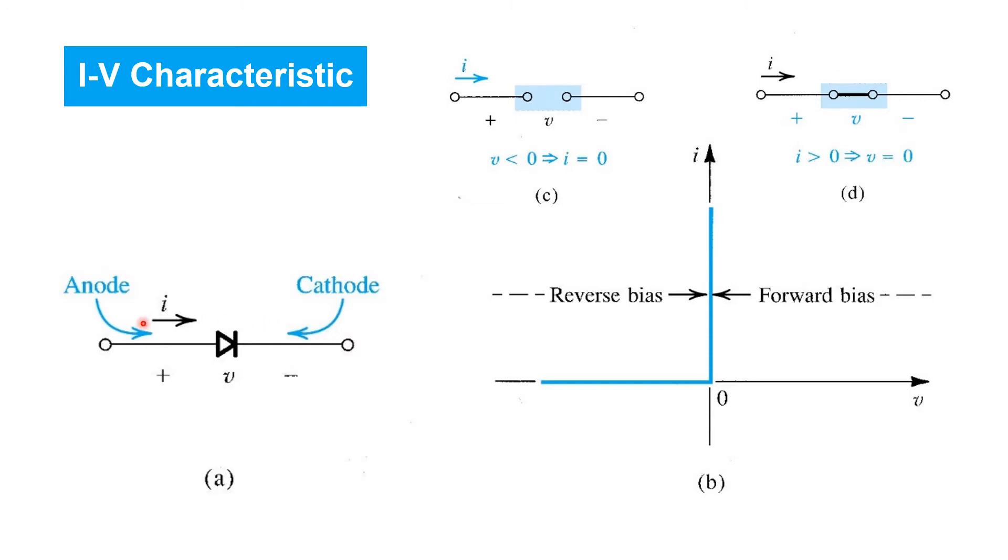Instead, if a reverse voltage is applied, the diode acts as an open circuit. Whereas, when current's flowing in the forward direction, there's a zero voltage drop appears across the diode. So the result is a piecewise linear IV characteristic shown here on the right.